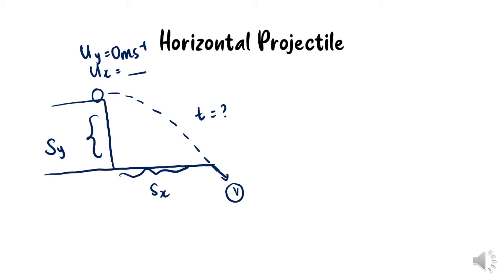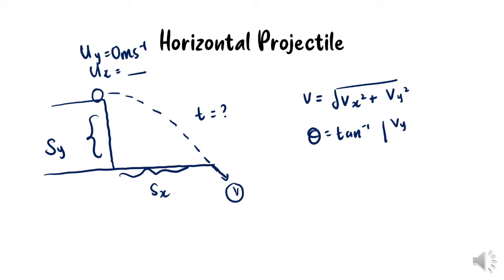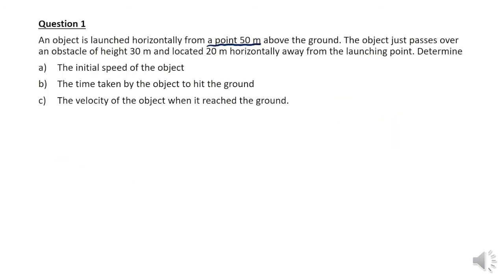To calculate the velocity of impact v, we need to find the values of vx and vy. Since velocity has x and y components, we apply the Pythagorean theorem to find the magnitude of v, and we apply arctan(vy / vx) to find the direction.